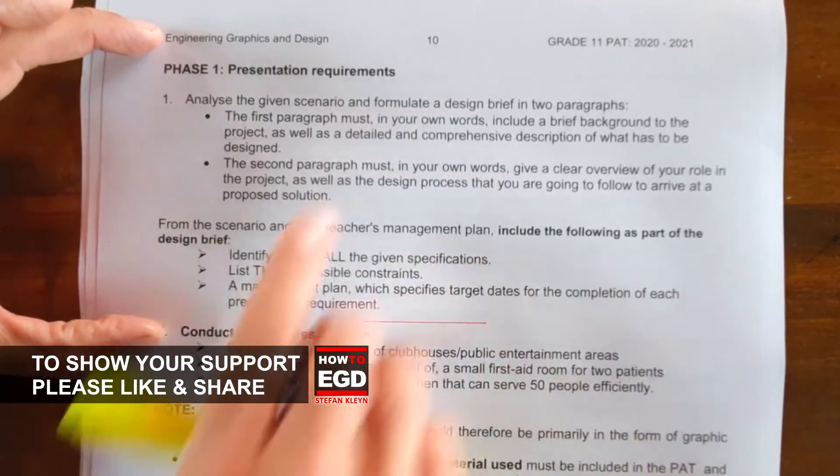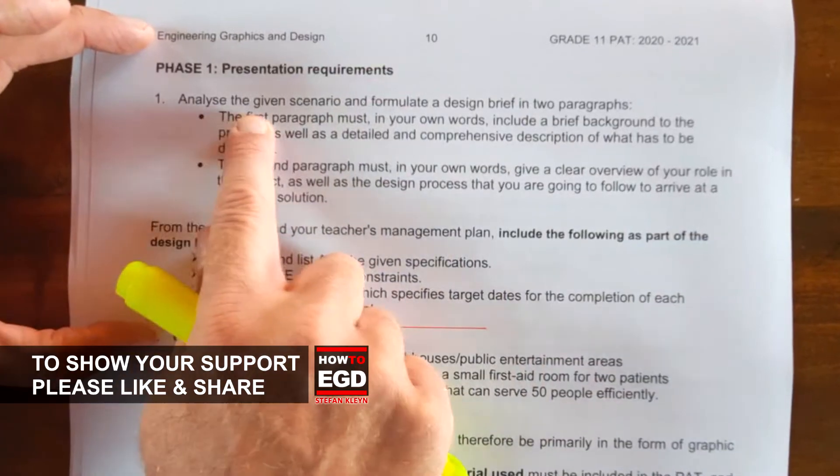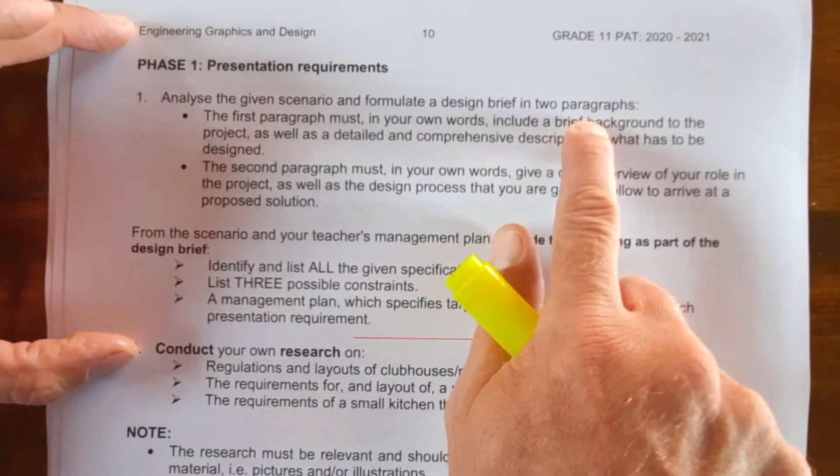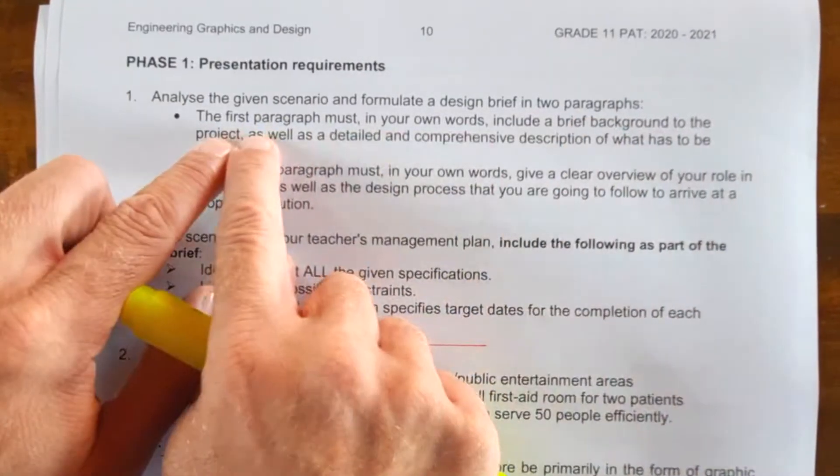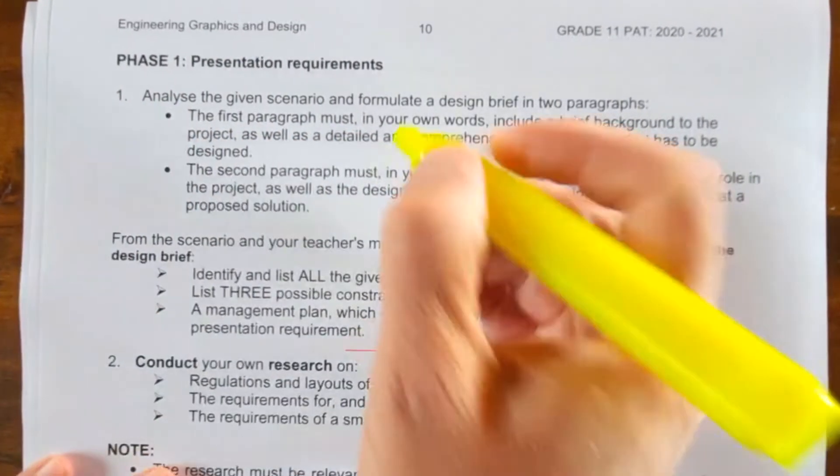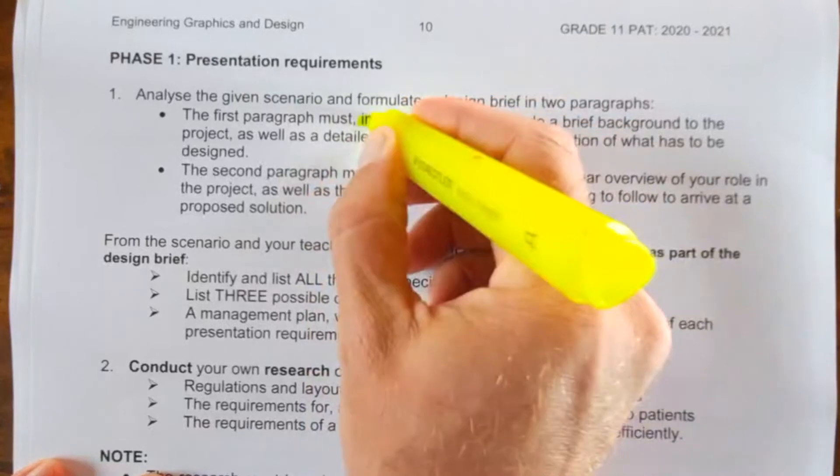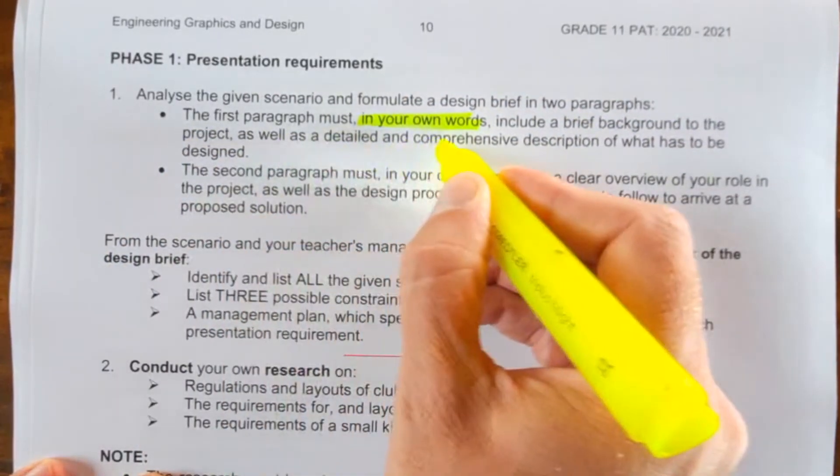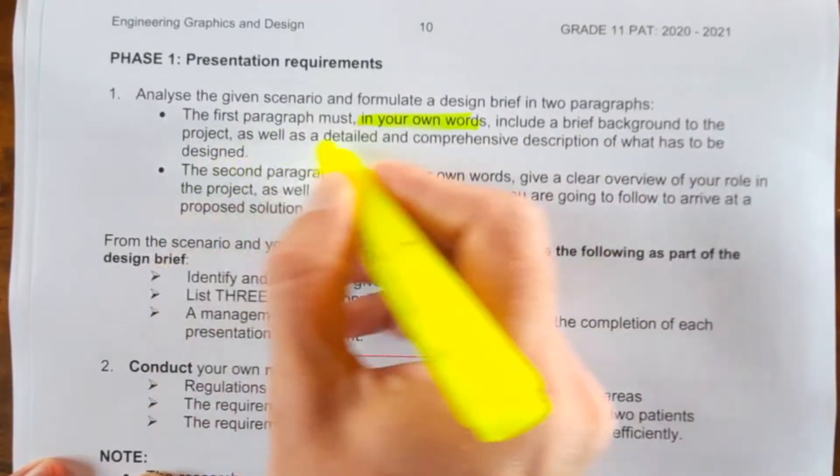Now in your PAT document on page 10, it reads: analyze a given scenario and formulate a design brief in two paragraphs. The first paragraph must, in your own words—I like that because that's very important—include a brief background to the project as well as detailed and comprehensive description of what has to be designed.